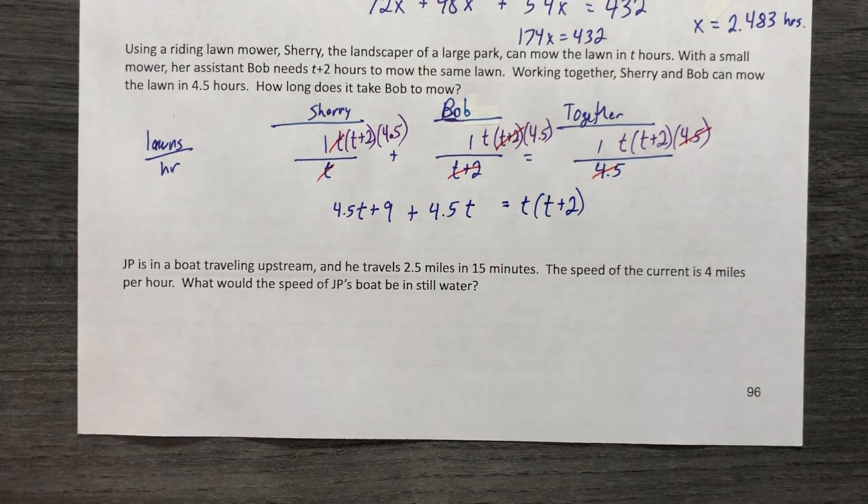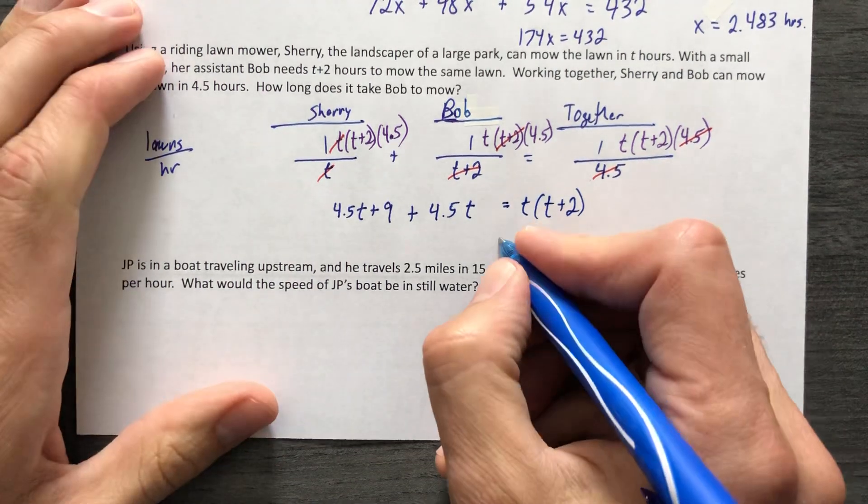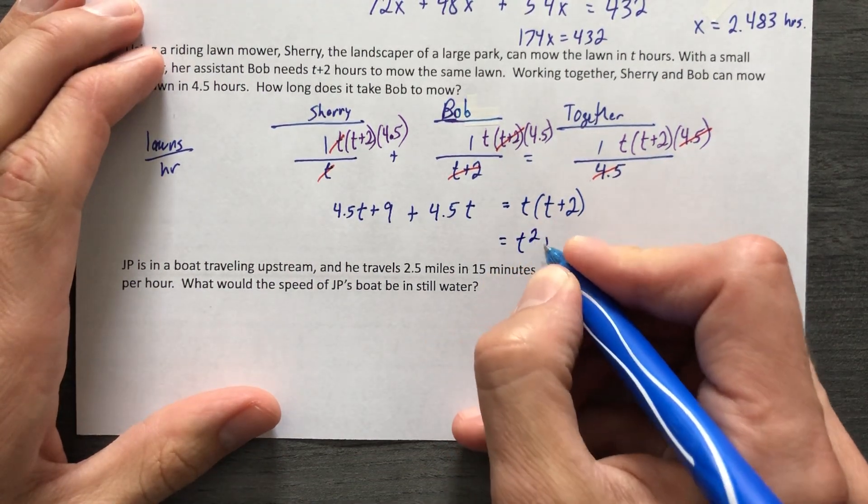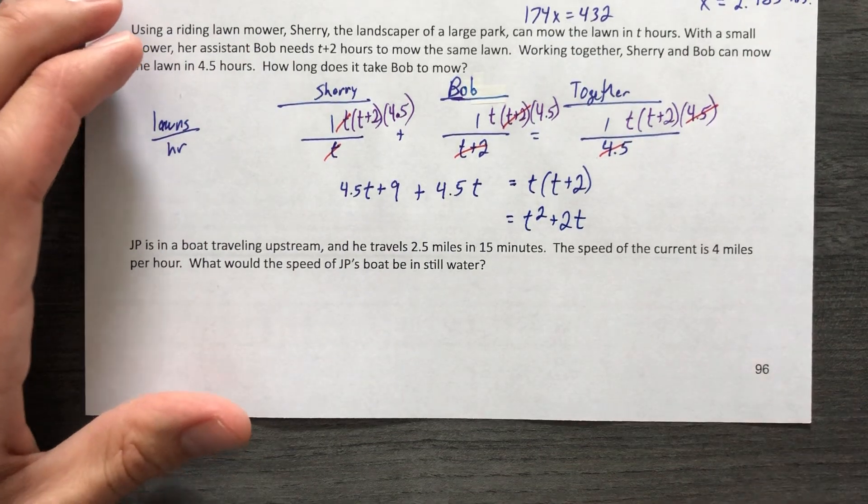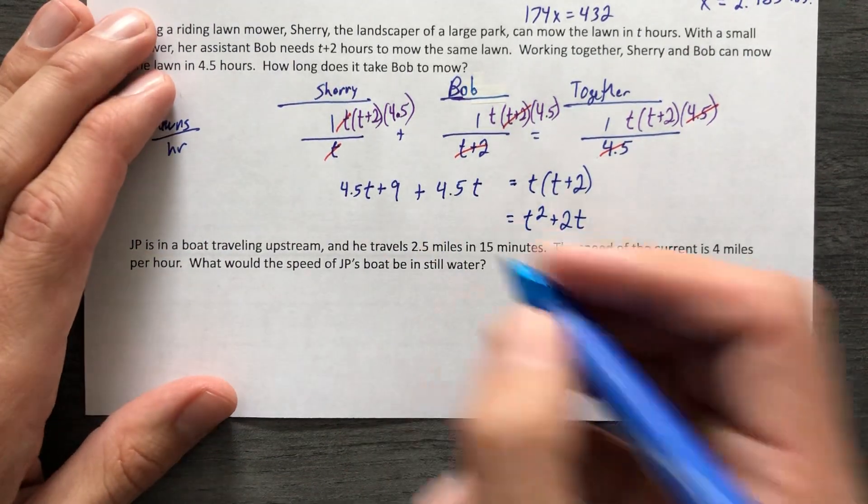And that is equal to T times T plus two. Oh my goodness, it's going to be quadratic. What are we going to do? Oh dear. Well, now it's getting cloudy outside, so the lights went out. It's getting cloudy outside. Maybe I should just stop the problem.